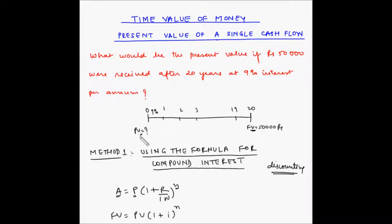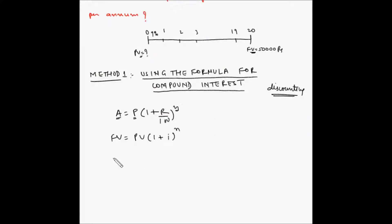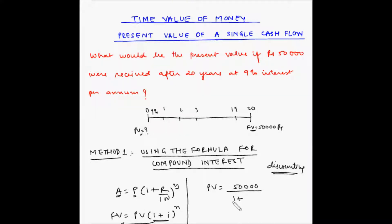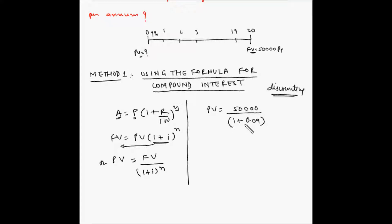Here we are trying to find the present value, so let us bring present value to one side: Present Value = Future Value ÷ (1 + i)^N. Plugging in the values: Present Value = 50,000 ÷ (1 + 0.09)^20, since i = 9/100 = 0.09 and N = 20. This becomes 50,000 divided by 1.09 raised to the power of 20.